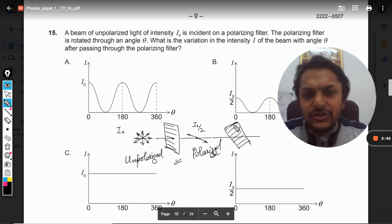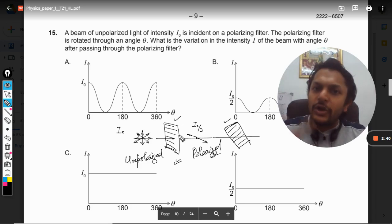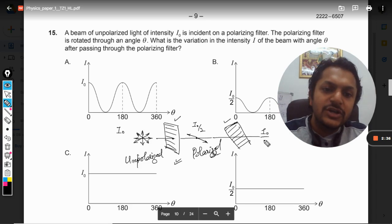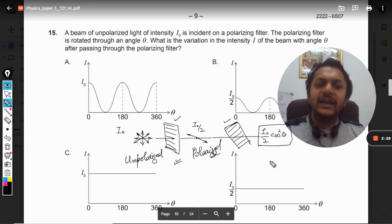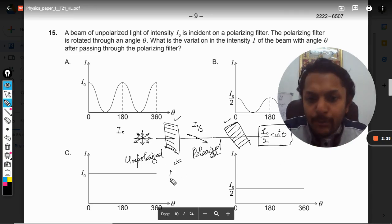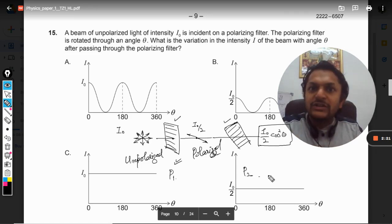So the angle of this polaroid and this polaroid is θ, then it will become I₀/2 times cos²θ, where θ is the angle between the axis of polarizer 1 and polarizer 2. But in this question there is no second polarizer.